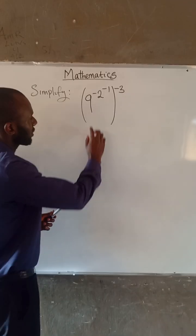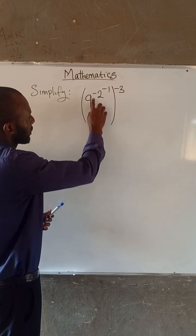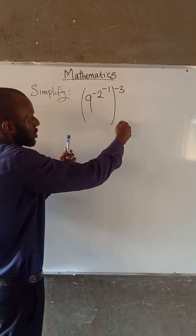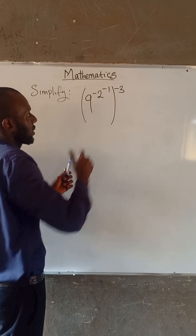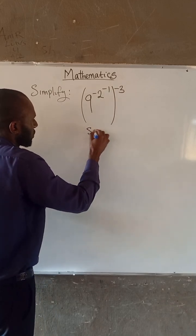So we have 9 to the power of negative 2 to the power of minus 1, all in brackets to the power of negative 3. So let us simplify this.